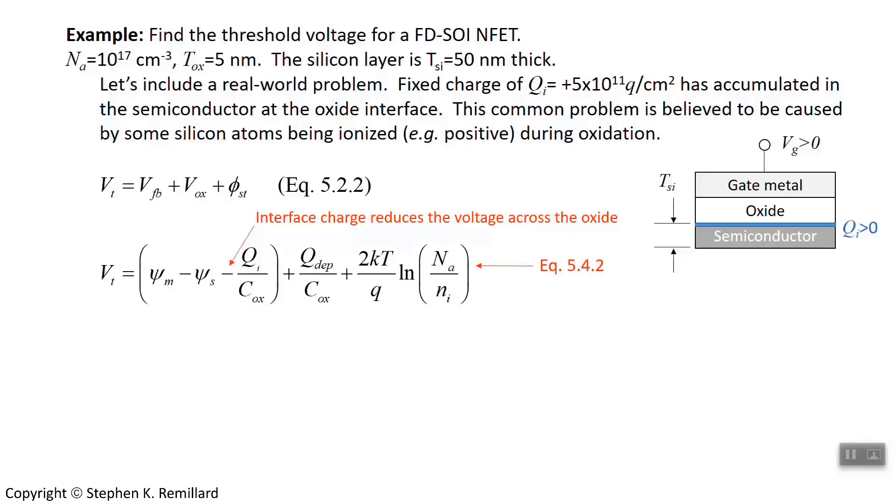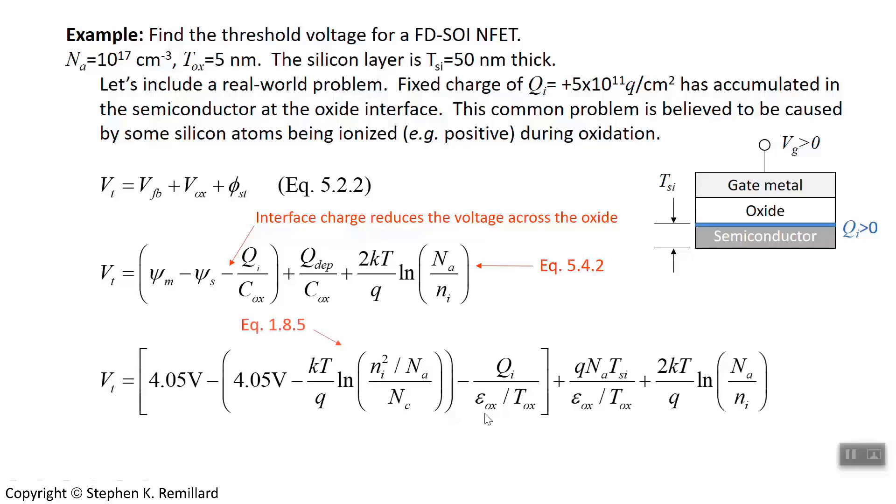Put in some numbers for some of this stuff. The work function of the metal silicide is just the electron affinity of silicon. The work function of silicon is that electron affinity plus the extra energy that gets you down to the Fermi level. And so that's why this parenthesis here is a little modified. We replace C_oxide with the permittivity of the oxide divided by the thickness of the oxide.